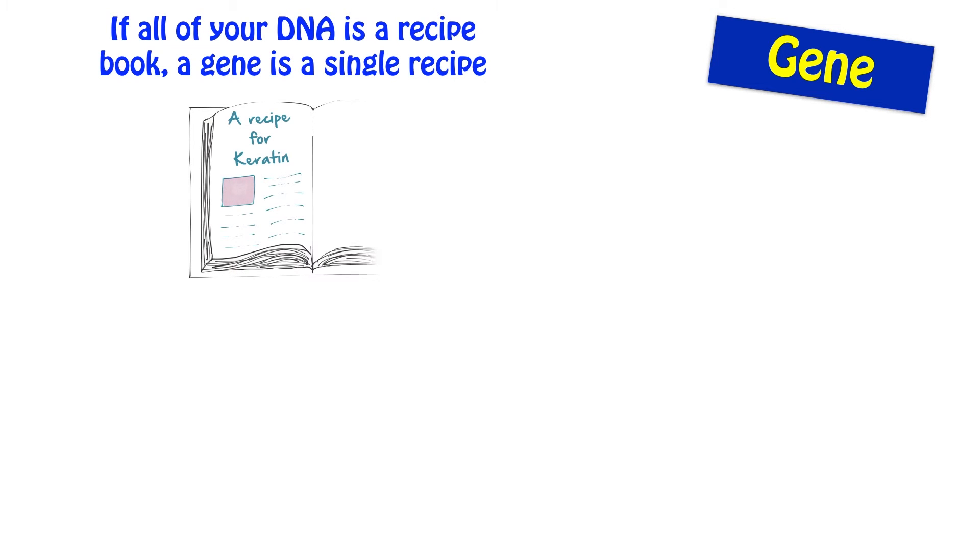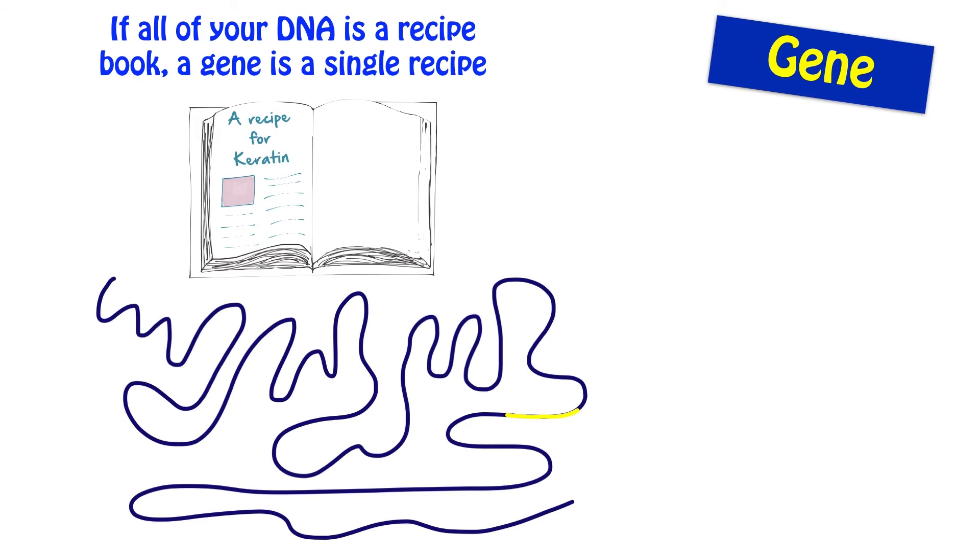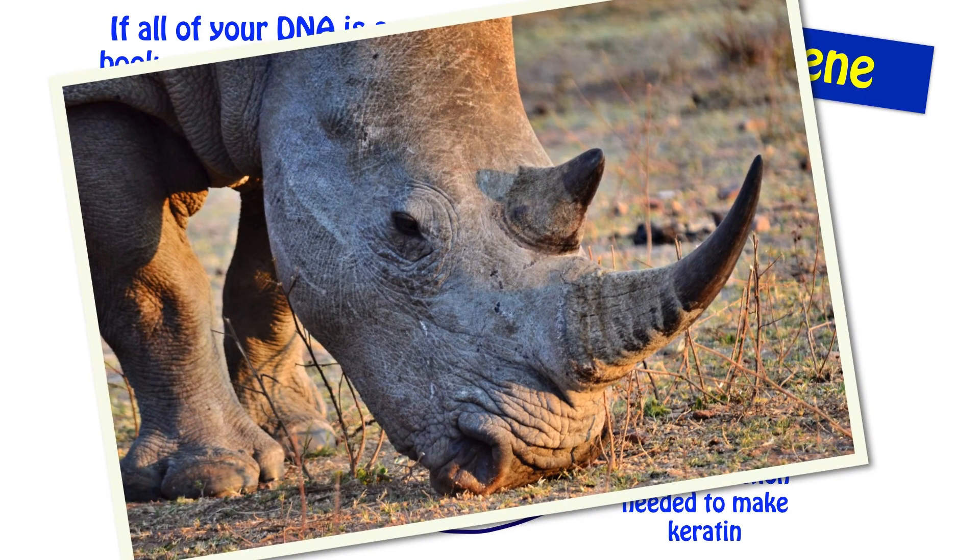A gene is basically one single recipe. If you imagine this idea of your DNA being a recipe book, then the gene is that one individual piece of instruction, basically the information for making one protein. So, let's imagine that here we've got one strand of DNA and highlighted is one small section of it, and that might be the section that codes for making keratin. Remember, keratin being a structural protein present in rhino horns, for example.